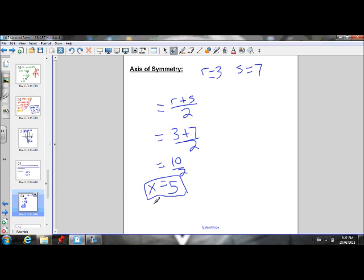So x equals 5 is our axis of symmetry. X equals 5 represents a vertical line going through 5 on the x-axis. So far, what we know, let me just do another rough sketch of the problem.